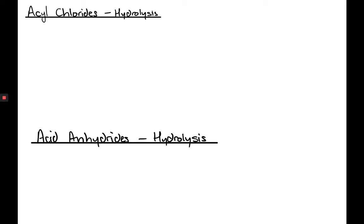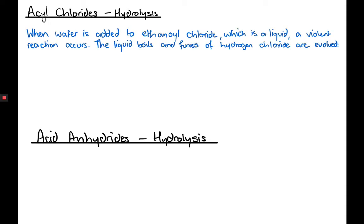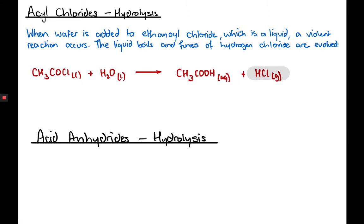Looking at the hydrolysis reaction — reacting acyl chloride with water and acid anhydride with water. With acyl chloride we get a very vigorous, very violent reaction. Acyl chlorides are really very reactive; you have to be very careful about keeping them where no water can get to them because it's incredibly exothermic. The liquid boils, and one of the products is hydrogen chloride gas, which is obviously very dangerous. You may recall from Group 7 that hydrogen chloride produces misty white fumes.